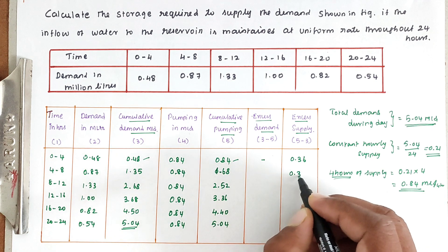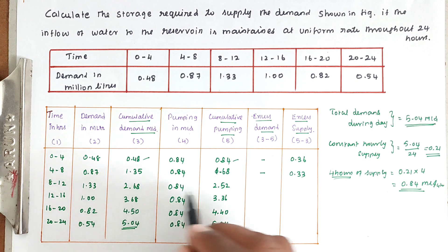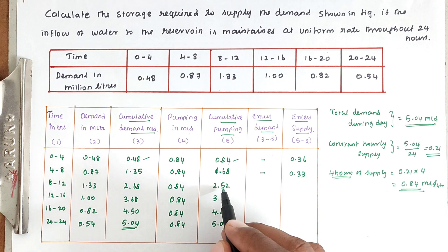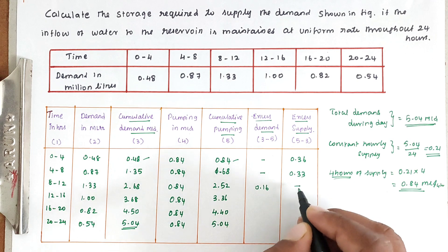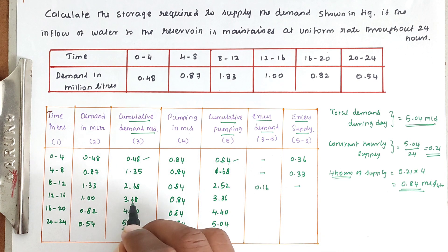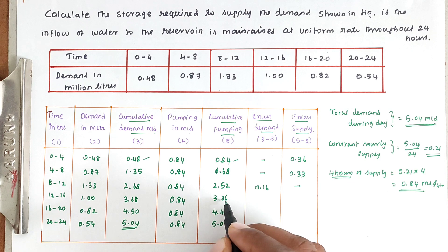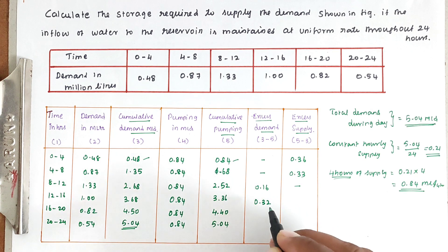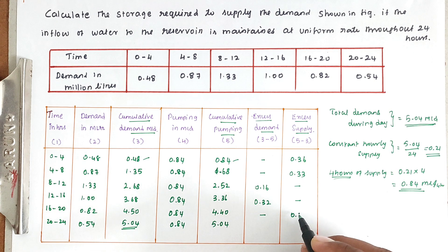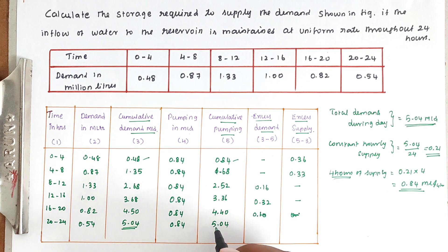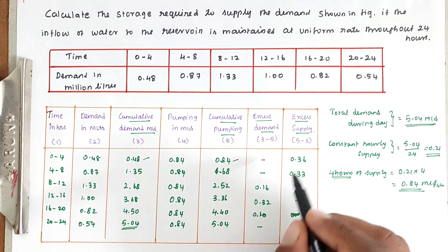Next, demand is 2.68 but we supply only 2.52 — so there is excess demand of 0.16. Then required is 3.68 but we supplied only 3.36 — excess demand of 0.32 million liters. Then 4.50 is required but we sent only 4.40 — excess demand of 0.10. Finally required is 5.04 and we supplied 5.04 — so there is no excess demand or supply.